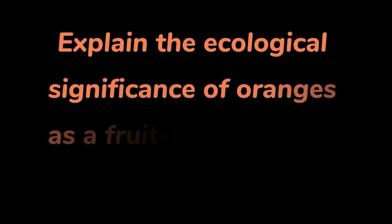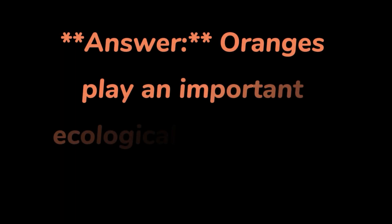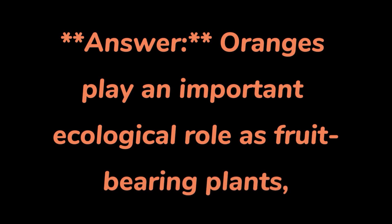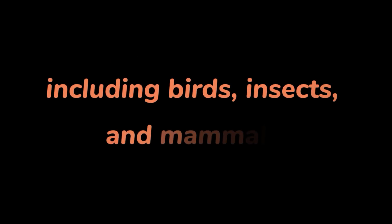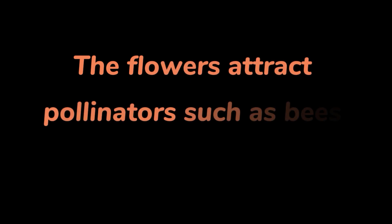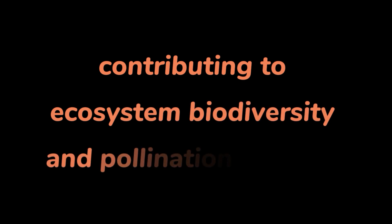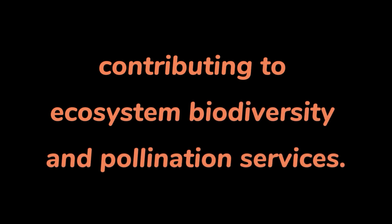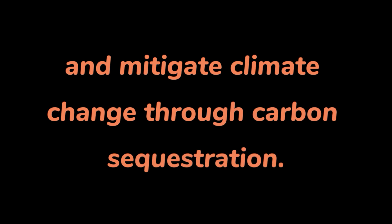Question 5: Explain the ecological significance of oranges as a fruit-bearing plant species. Answer. Oranges play an important ecological role as fruit-bearing plants, providing food and habitat for a variety of wildlife species, including birds, insects, and mammals. The flowers attract pollinators such as bees and butterflies, contributing to ecosystem biodiversity and pollination services. Additionally, orange trees help stabilize soil, conserve water, and mitigate climate change through carbon sequestration.